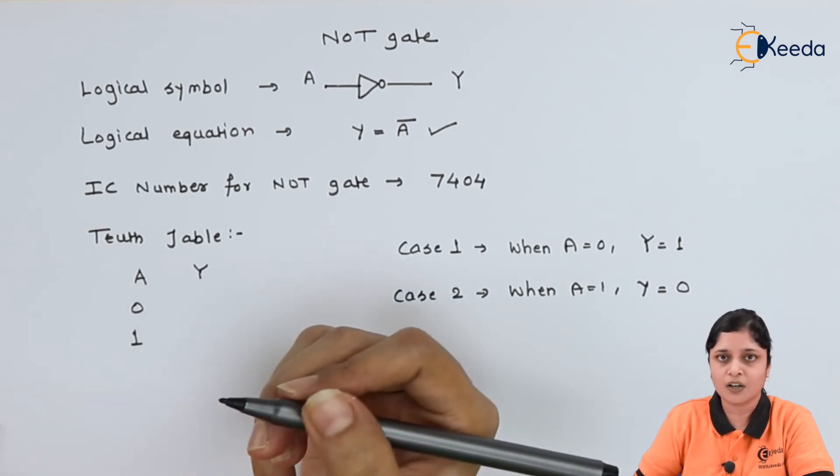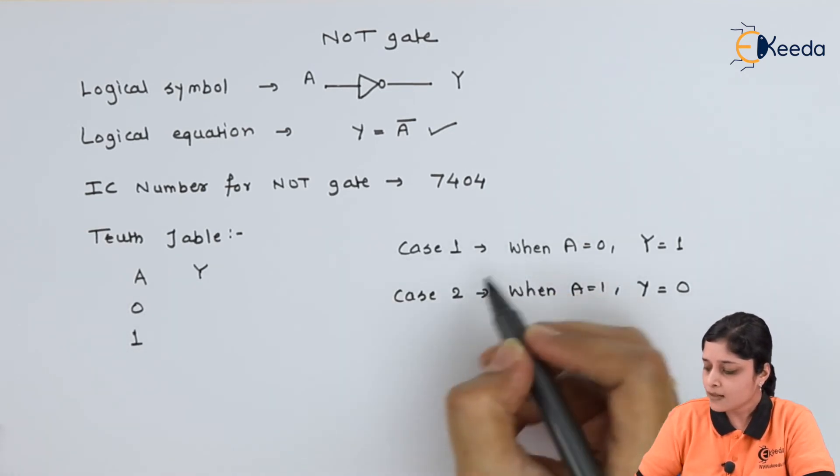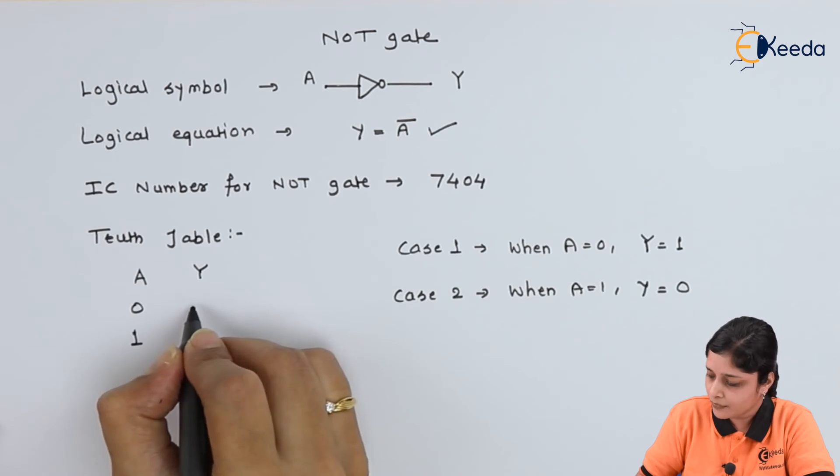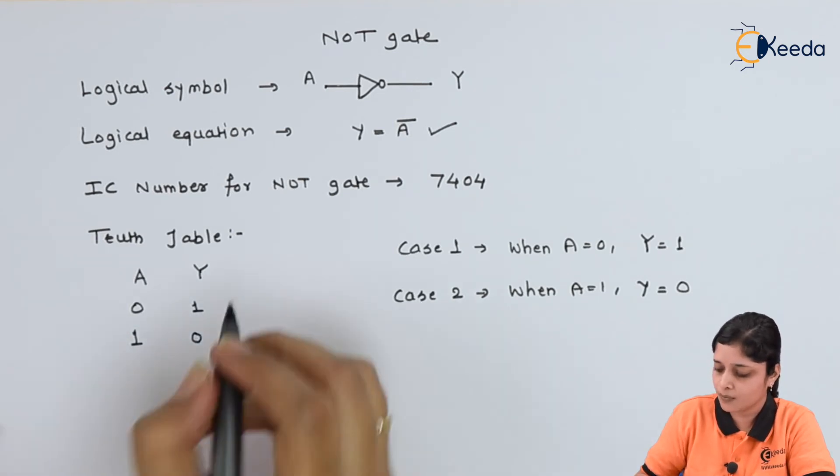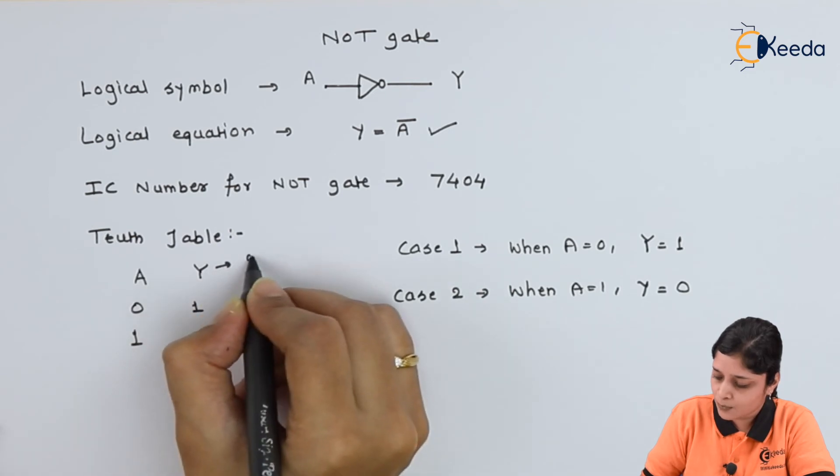Or you can say inverted output. So in this way you have to complete your truth table. So in output side you will get 1, 0. Complement of 0 is 1, complement of 1 is 0. Y is the output for NOT gate, A is the input for NOT gate.